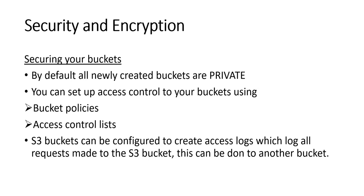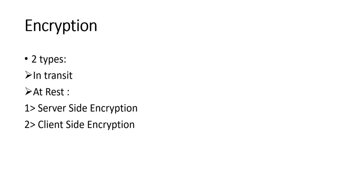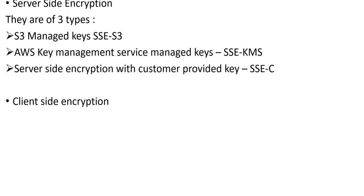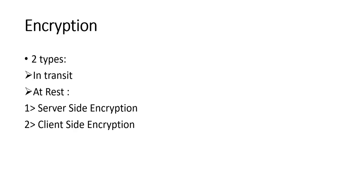Access logs can also be sent to another AWS account. Encryption is a very important topic and you need to know all the types. One of them is encryption in transit — when you are sending information to and from the bucket, it is secured using SSL or TLS. At rest, there are two types: server-side encryption and client-side encryption.